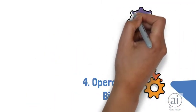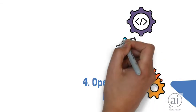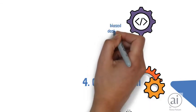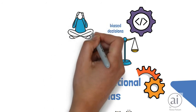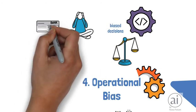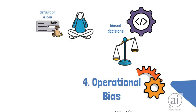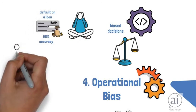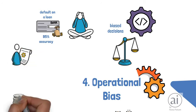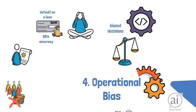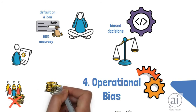Operational bias: finally, a system is biased if the way it's used in practice contains bias. For example, imagine that an algorithm is capable of predicting whether someone will default on a loan with 95% accuracy. However, if the decision makers who use this algorithm are more likely to reject individuals from low income groups than high income, then the algorithm will function in a biased manner.